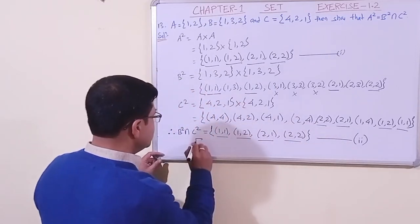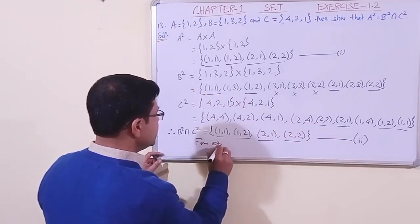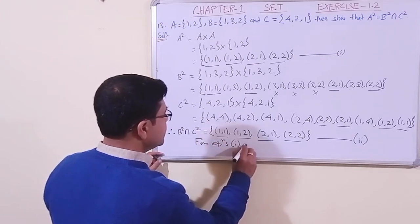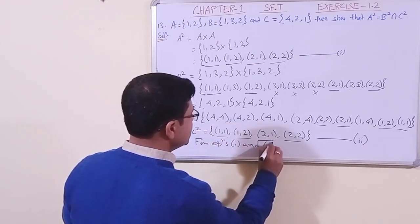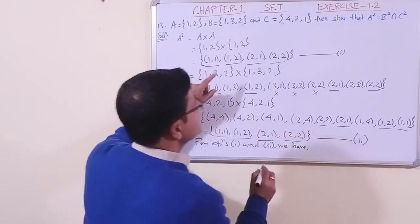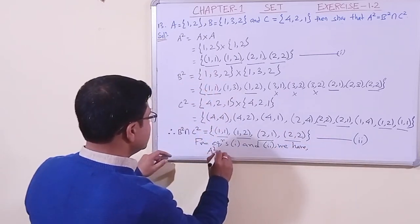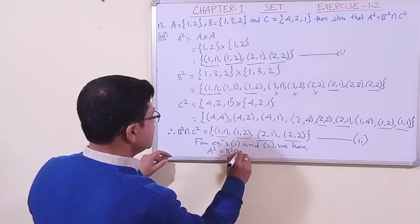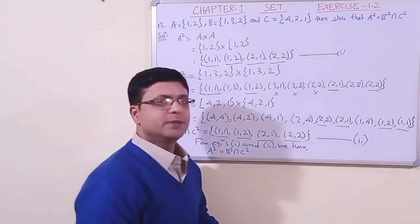So from equations 1 and 2, what we have? A square is equal to B square intersection C square. Thus we have proved it. Okay, students?